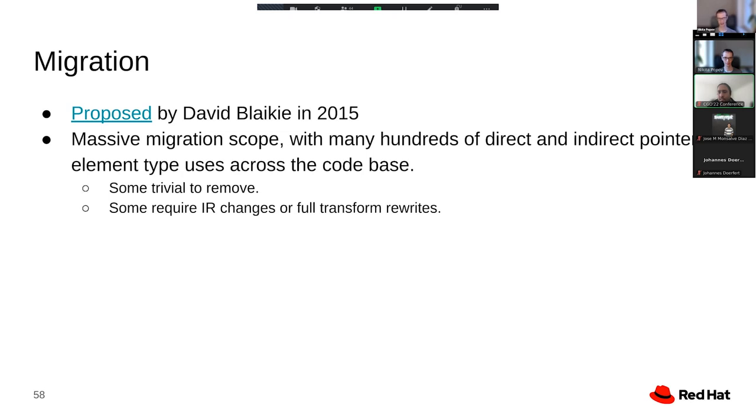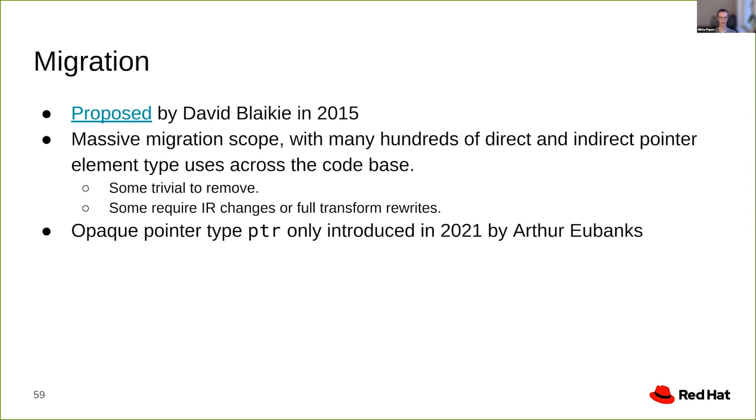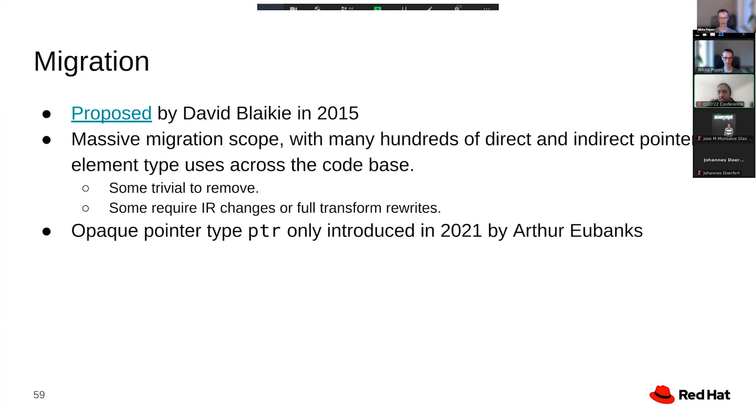And this work has happened kind of sporadically over the years. Usually with someone stepping in, doing some work on the migration, and then there is again silence for multiple months. I think the work only really picked up last year when Arthur Eubanks introduced the actual opaque pointer type. Which allowed us to write tests using opaque pointers rather than just working on the concept in abstract.